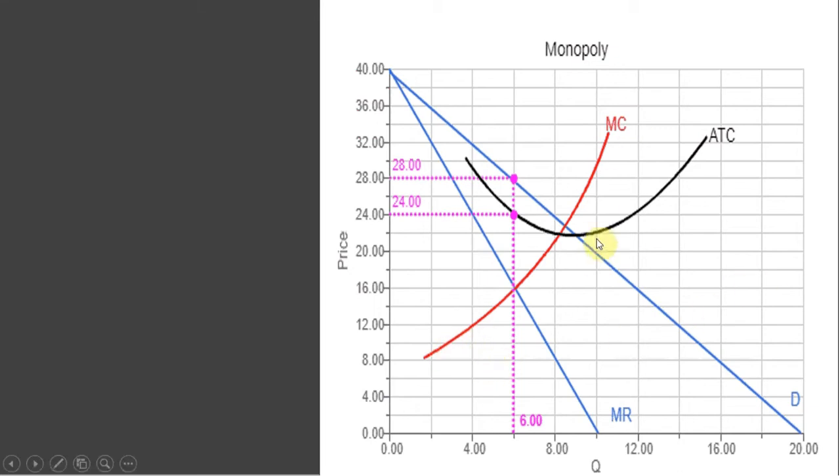The Monopoly has a marginal cost curve here and an average total cost curve. First thing we want to find is where does the Monopoly produce? What is its profit-maximizing output?